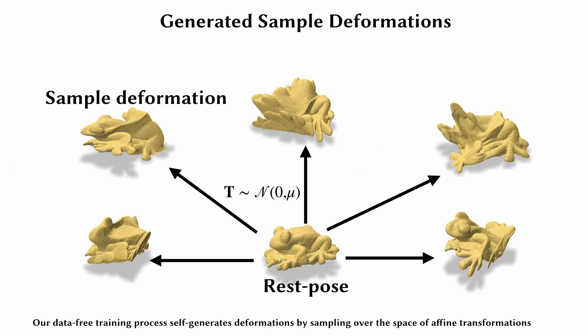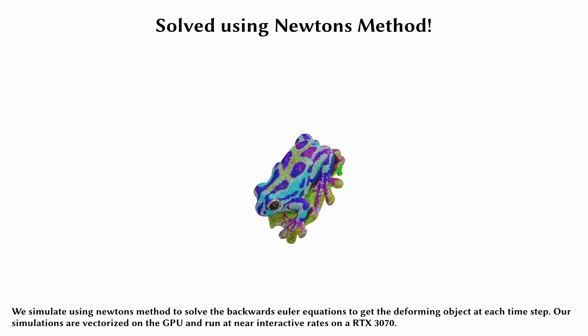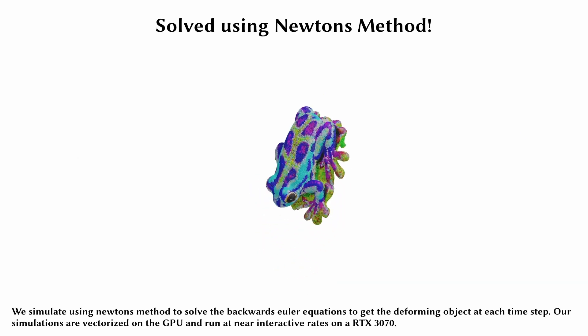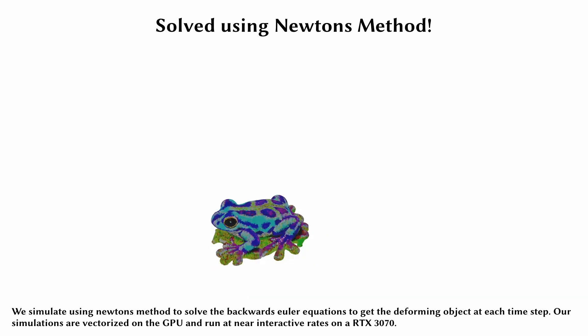Our data-free training process self-generates deformations by sampling over the space of affine transformations. We simulate using Newton's method to solve the backwards Euler equations to get the deforming object at each time step. Our simulations are vectorized on the GPU and run at near-interactive rates on an RTX 3070.